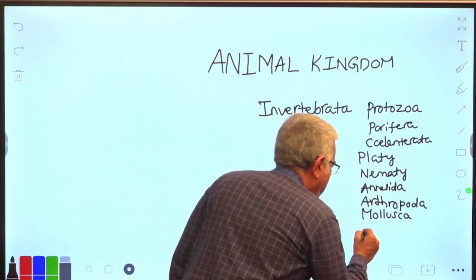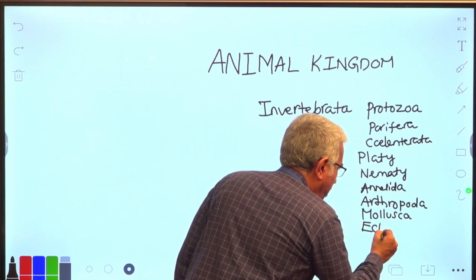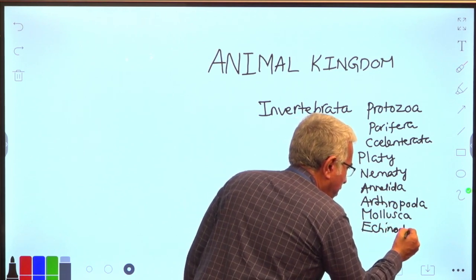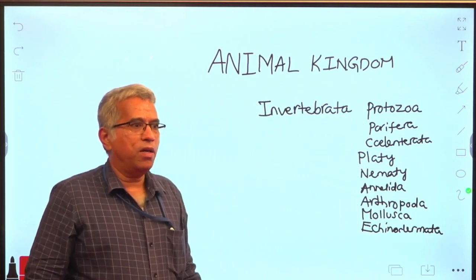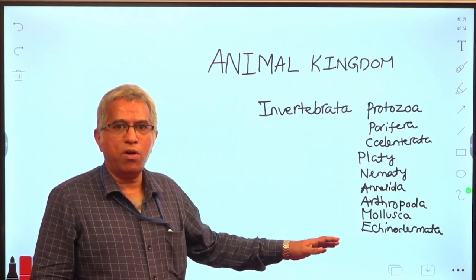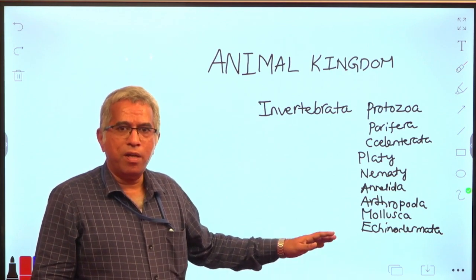The last phylum of invertebrata is echinodermata. This is the last phylum. This includes starfishes. Let me sum up.